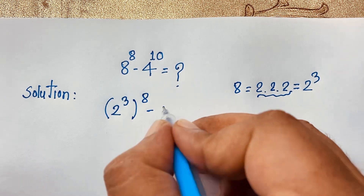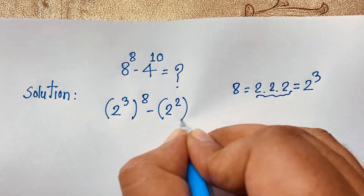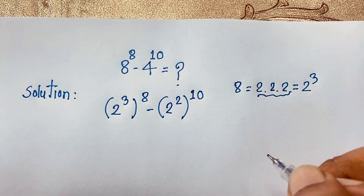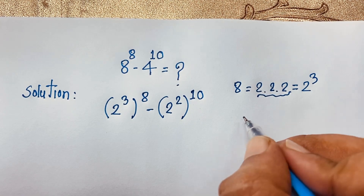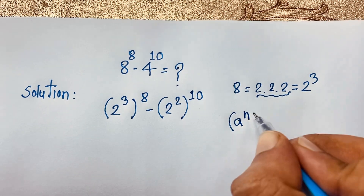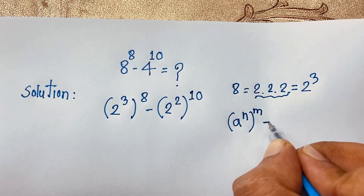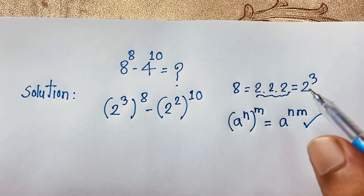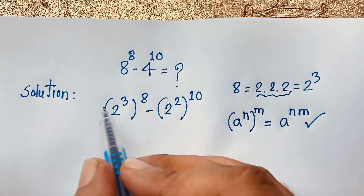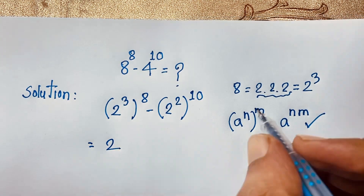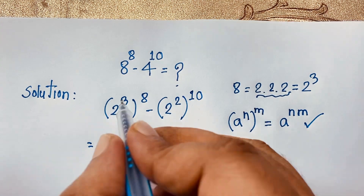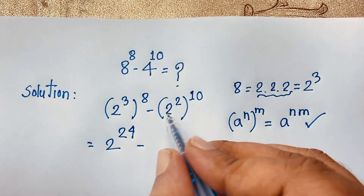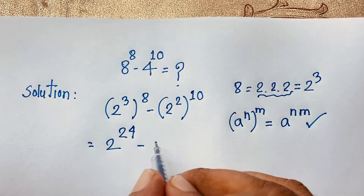Similarly, 4 equals 2 to the power 2, so 4 to the power 10 equals (2 to the power 2) to the power 10. Now using the exponential law: (a to the power n) to the power m equals a to the power n times m. Applying this law, the expression becomes 2 to the power 24 minus 2 to the power 20, since 3 times 8 equals 24 and 2 times 10 equals 20.